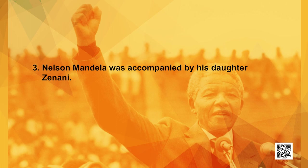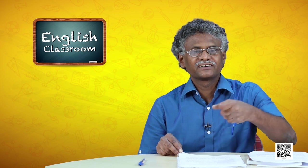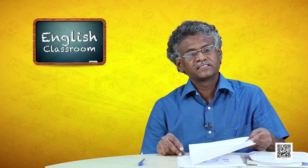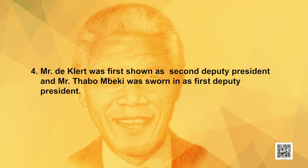Nelson Mandela was accompanied by his daughter Zenoni. Learners, two weeks ago Zenoni passed away. She was quite young when Nelson Mandela assumed office as the first black president. Zenoni later became a civil rights activist. Mr. De Klerk was sworn in as second deputy president, and Mr. Thabo Mbeki was sworn in as first deputy president of South Africa.